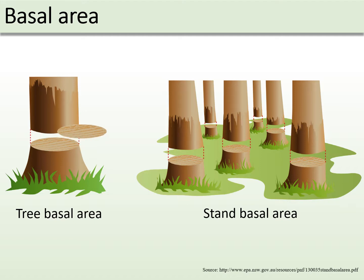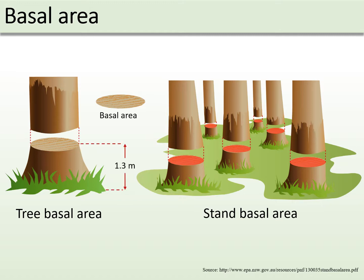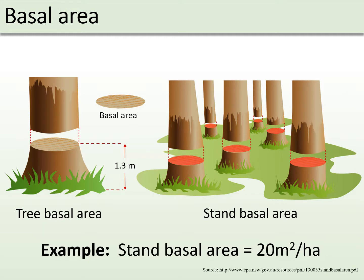Basal area refers to stand basal area. It is the total cross-sectional area of all the stems in a stand measured at breast height of 1.3 meters. It is calculated by adding the cross-sectional area of all the trees present in the stand and dividing by the area in which the trees were measured. It is expressed in square meters per hectare — an example could be 20 square meters per hectare.